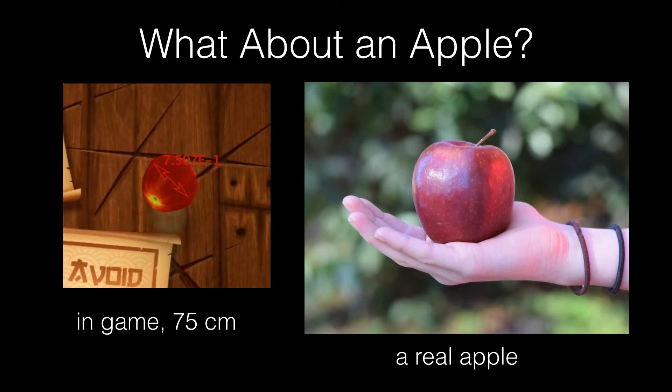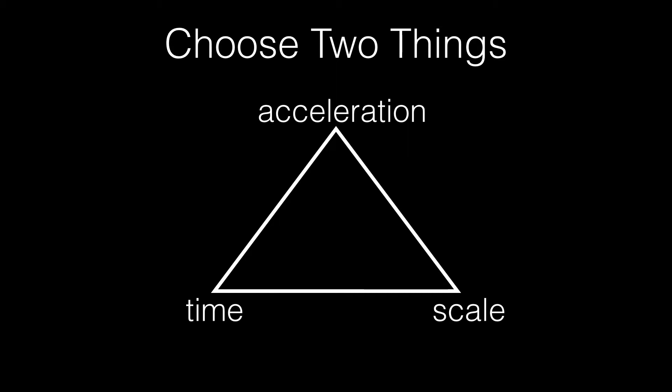So that's finding the scale of fruit in Fruit Ninja. But really, if we think about constant acceleration motion, there's three things. And we can pick two of them to be true. So we have the vertical acceleration.